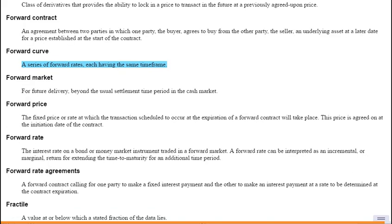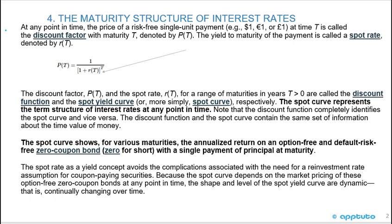Scrolling up to the forward curve, you can see it's a series of forward rates, each having the same time frame — the maturity structure of interest rates. At any point in time, the price of a risk-free single unit payment — for example, $1, 1 euro, 1 pound — at time T is called the discount factor with maturity T, denoted by P(T).